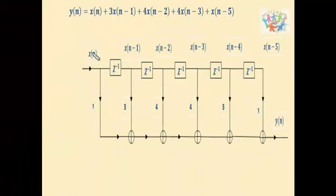On taking the inverse z transform you will get Y of z as y of n, X of z as x of n, and this z power minus 1 into X of z will be written as x of n minus 1, and similarly for the other terms also.